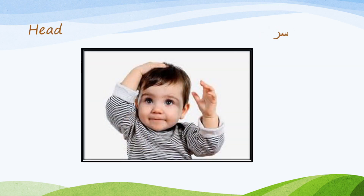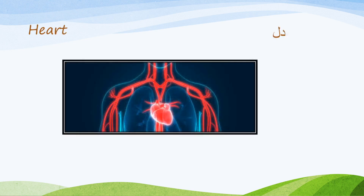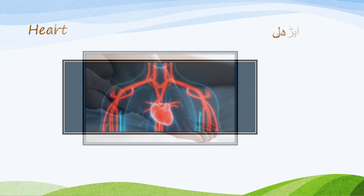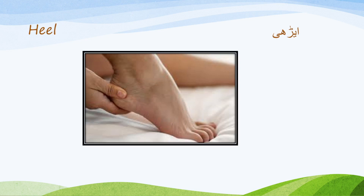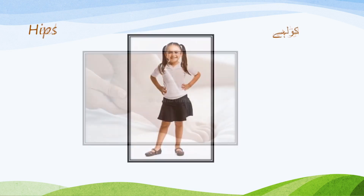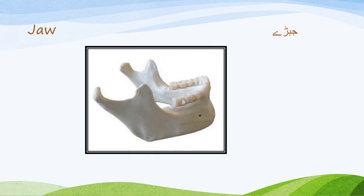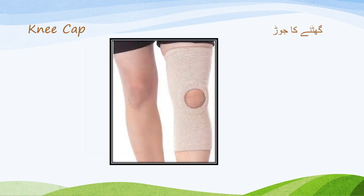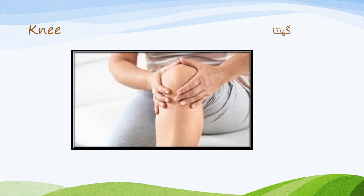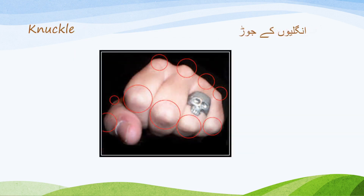Head — Head. Heart — Dill. Heel — Eady. Hips — Poole. Jaw — Jabde. Knee cap — Gutnay ka jord. Knee — Gutna. Knuckles — Ungliyon ke jord.